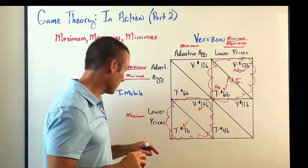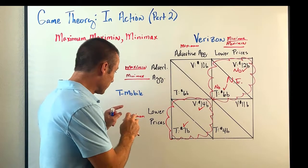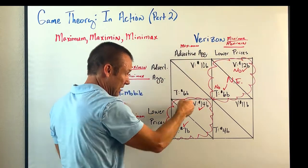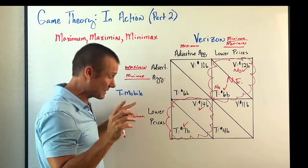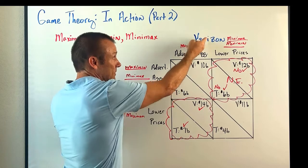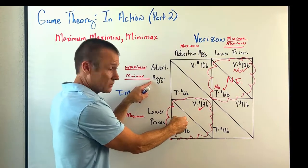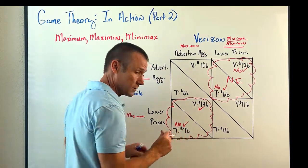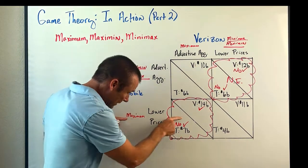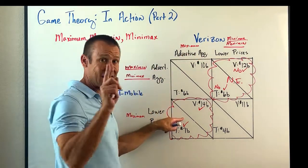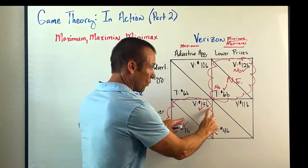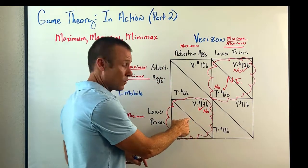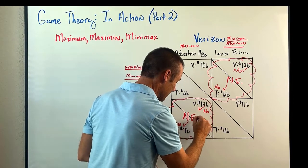Looking at the other outcome: T-Mobile played lower price, Verizon played advertise aggressively. Does T-Mobile have an incentive to switch strategies? That would take them from $7B to $6B — nope. And given T-Mobile played lower price, does Verizon have an incentive to switch from advertise aggressively? That would go from $14B to $11B — nope. That's another Nash equilibrium.